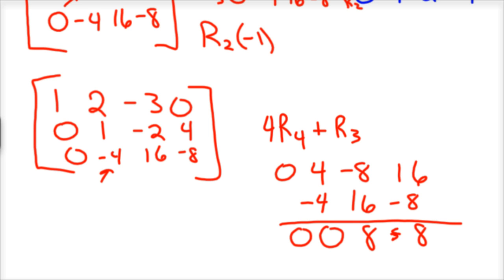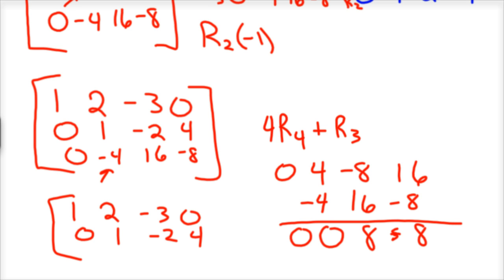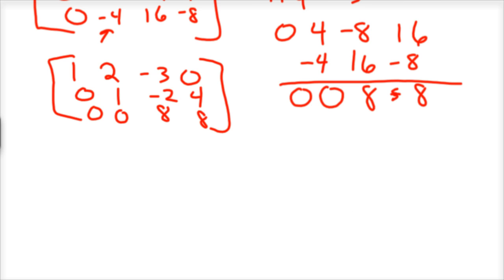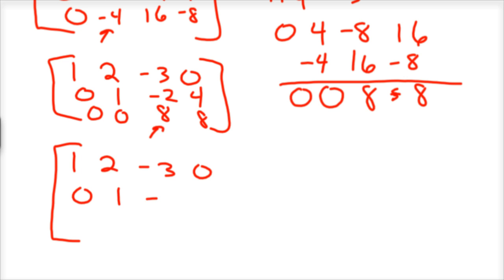So my new matrix is: 1, 2, negative 3, 0; 0, 1, negative 2, 4; and 0, 0, 8, 8. The final step is we need a 1 in that last diagonal position, so we'll divide row 3 by 8. Our final reduced echelon form matrix is: 1, 2, negative 3, 0; 0, 1, negative 2, 4; and 0, 0, 1, 1.